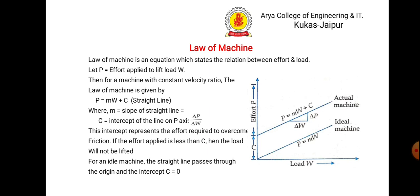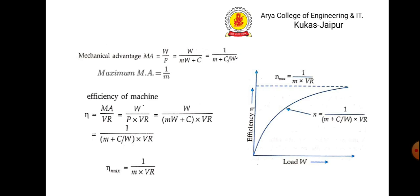For an ideal machine with no friction, C equals zero. The mechanical advantage is W/P = W/(MW + C) = 1 / (M + C/W). For maximum mechanical advantage, C/W must be zero, so maximum mechanical advantage equals 1/M. And the maximum efficiency will be 1 / (M × VR).